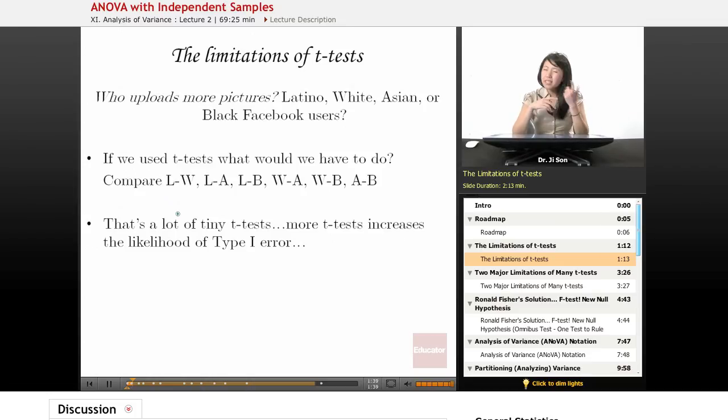Well, let's see what would happen if we used independent samples t-tests. What would we have to do? We'd have to compare Latinos to whites, Latinos to Asians, Latinos to Blacks, and then whites to Asians, whites to Blacks, and Asians to Blacks. All of a sudden, we have to do six different independent samples t-tests.